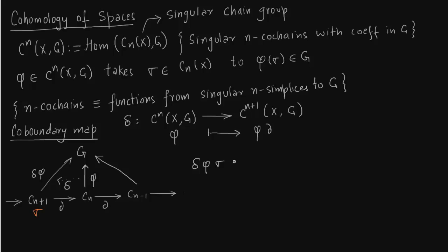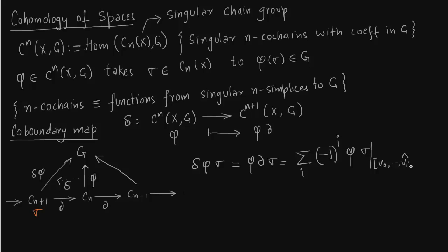Take σ in C_{n+1} and apply δφ to it, which maps C_{n+1} to G. So δφ = φ∘δ because that is the commutative triangle from C_{n+1} to C_n to G. Since φ is a homomorphism, the alternating sum (-1)^i filters out of φ, and what we get is the following formula for the co-boundary map.